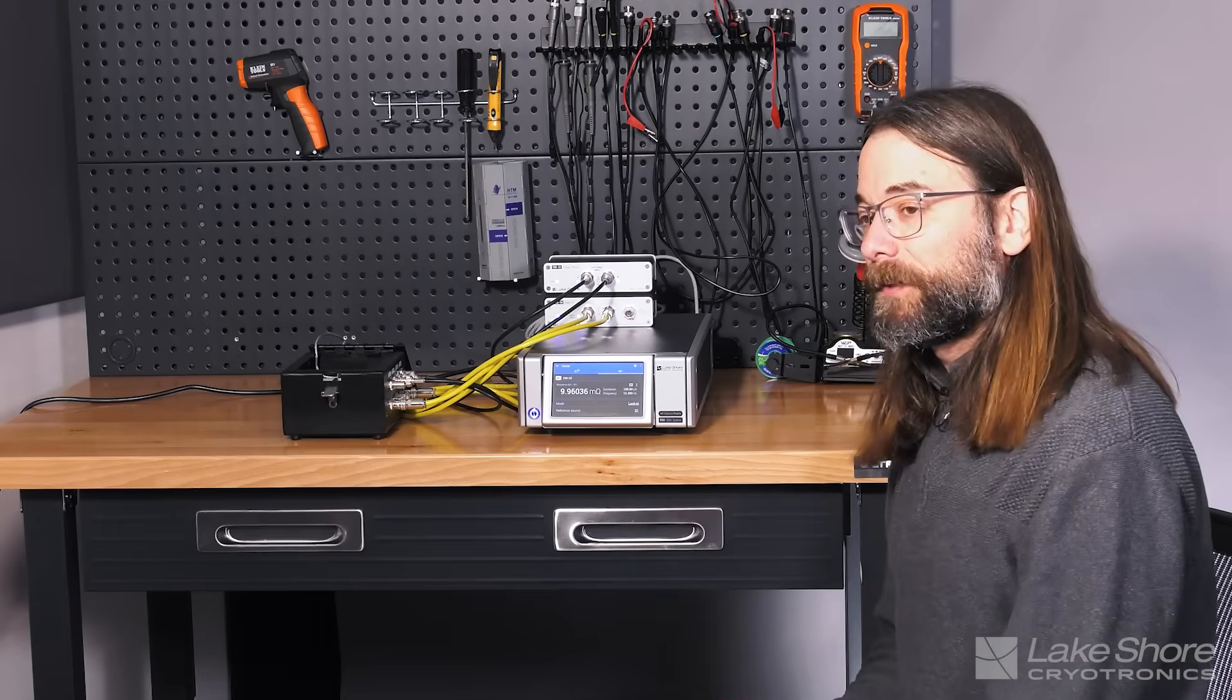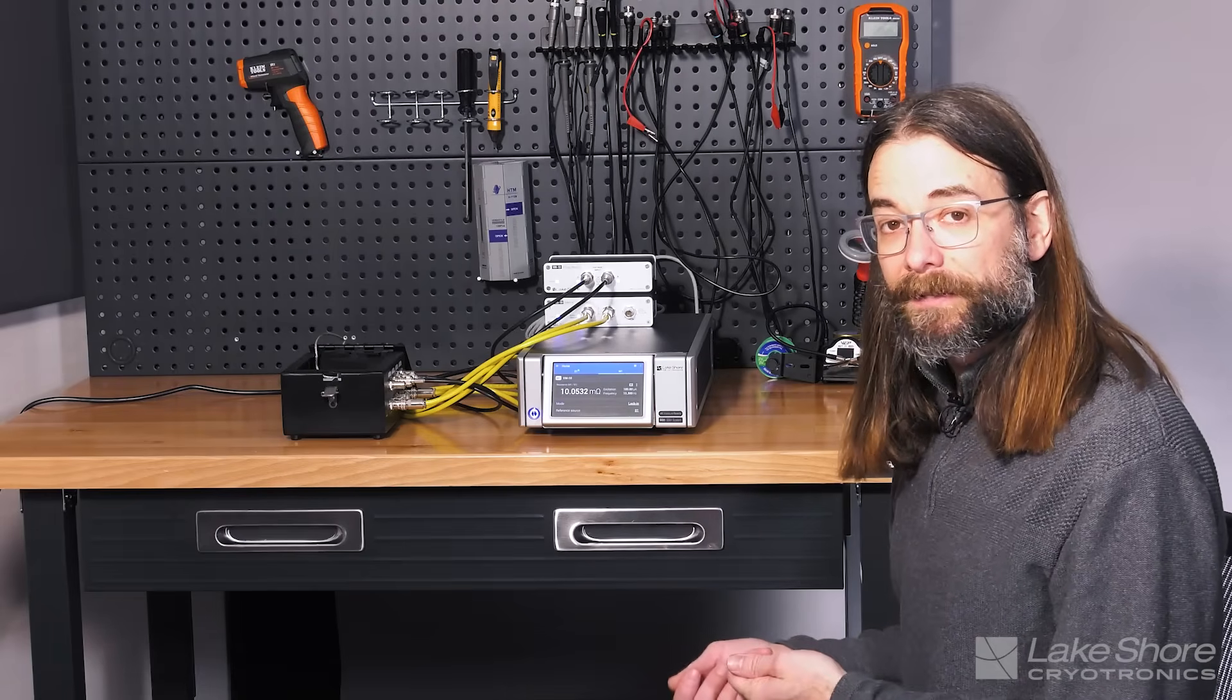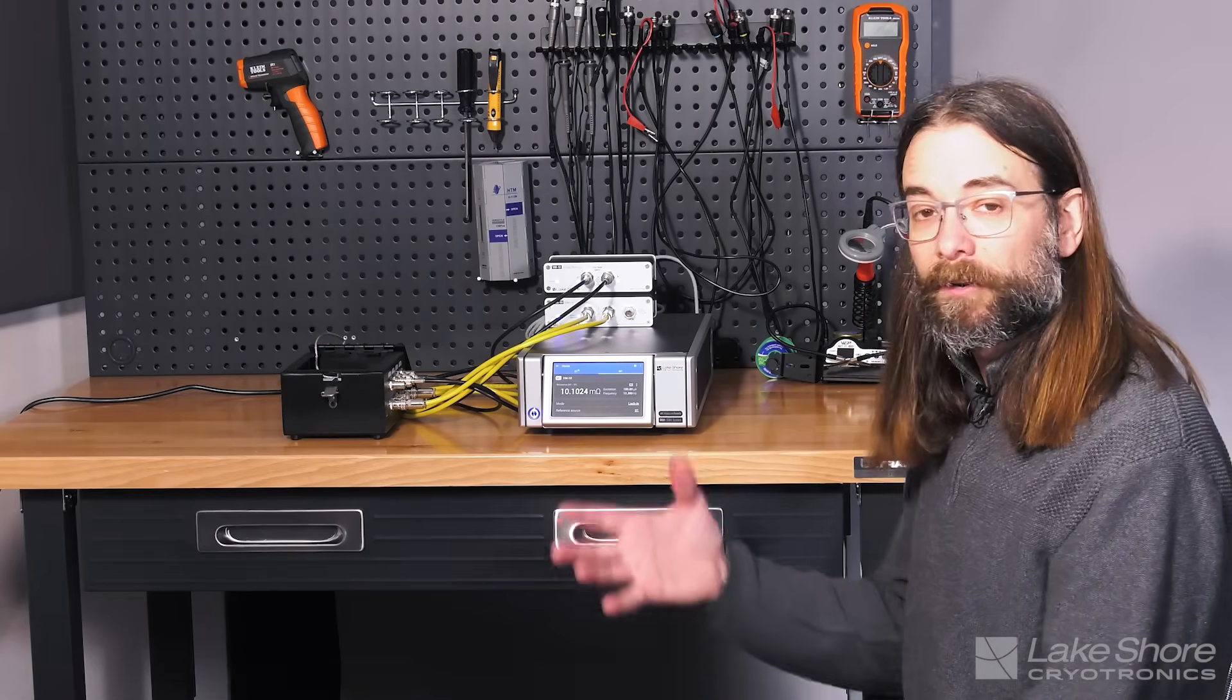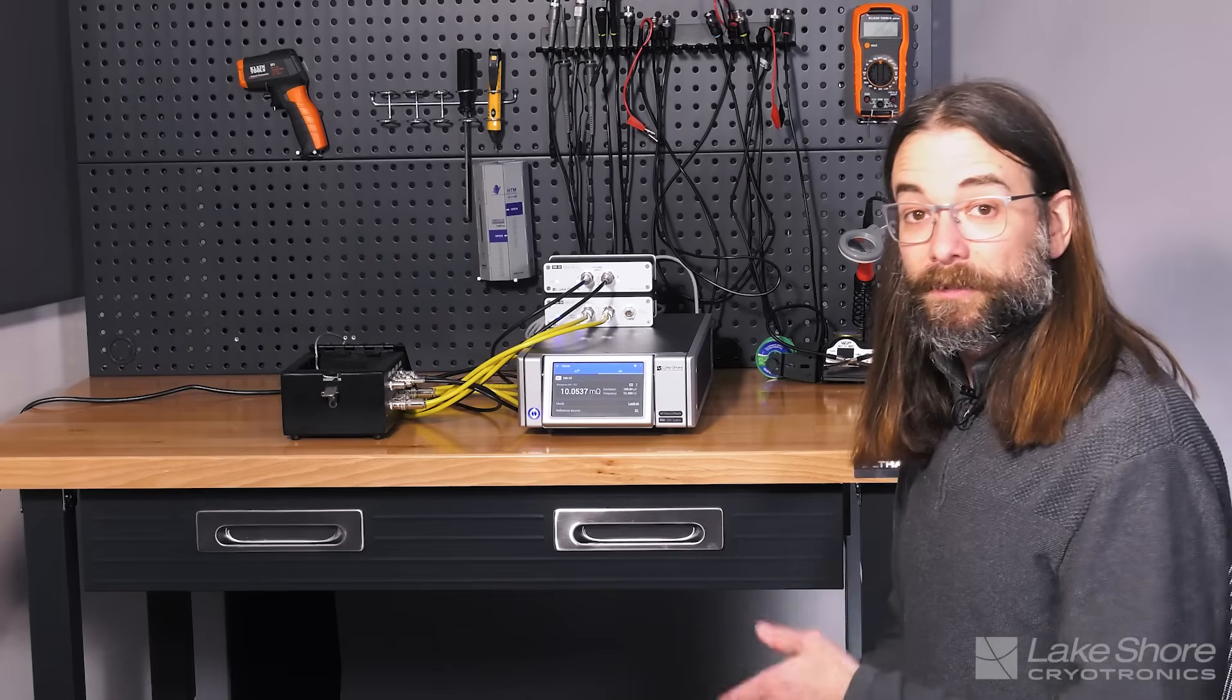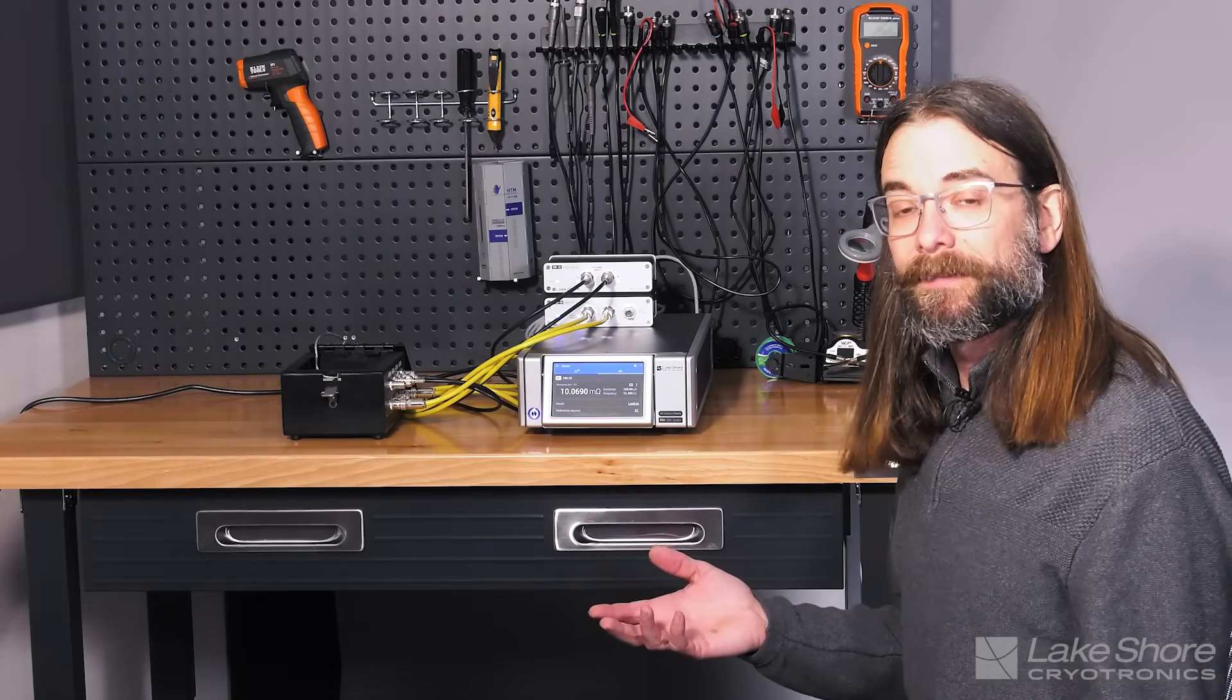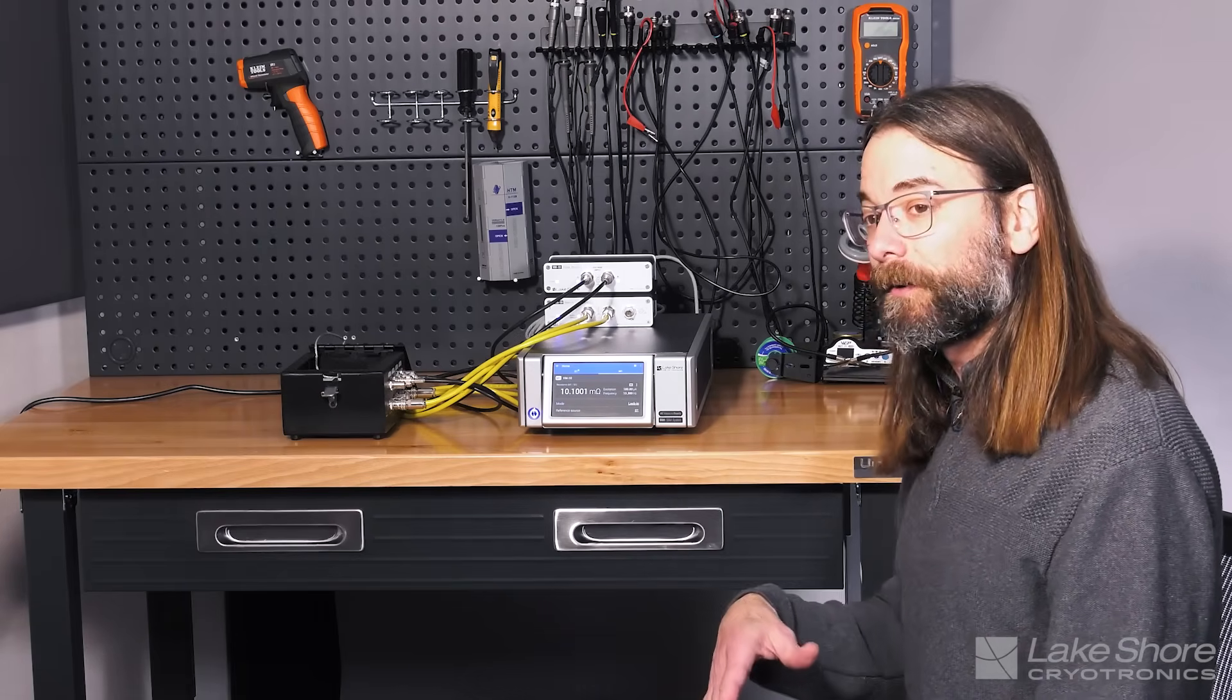So the advantages of a lock-in technique for low resistance, you can minimize the amount of power that you're delivering to the device under test. And that can be really critical if we're in a cryogenic environment. We're working very hard to keep the device under test very cold. We want to minimize how much current we're pumping into that device, because it's going to radiate heat. The more current we put in, the more heat we're going to add to the system. So we want to minimize that self-heating as much as possible. We could do that by lowering the current.